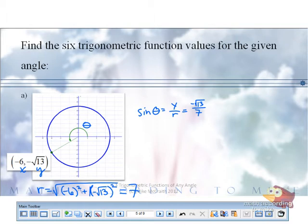How about our cosine? It would be x over r. Good. Is that okay so far? And how about tangent?